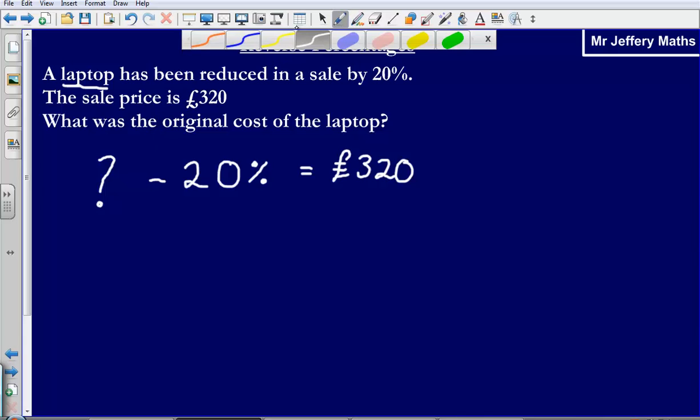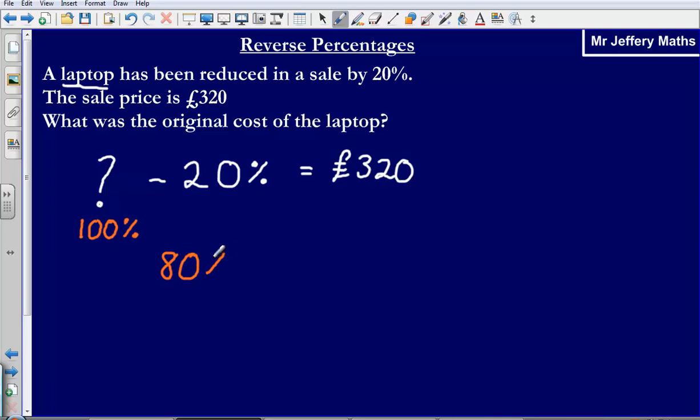So let's think about this carefully. If something has had 20% taken off, what I could say is that my original amount, that's the amount that I started with, that's all of the amount that I started with. So I can think of that as being 100%. Then what am I doing? I am taking off 20% from my 100%. So if I take off 20% from 100%, I am left with 80%. And so what I could say is that 80% is equal to my sale price. So my sale price is the equivalent of 80%. 20% has been taken off of the original, so I am left with 80%. And we are told that 80% is £320.